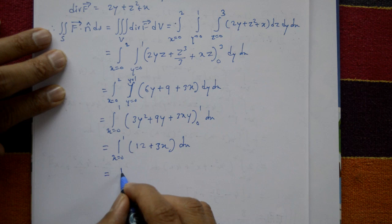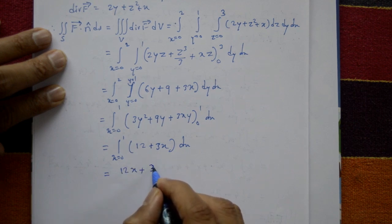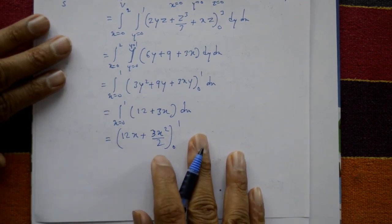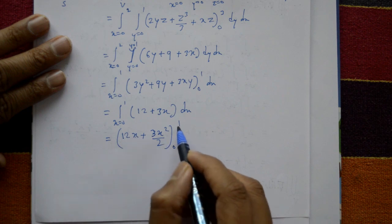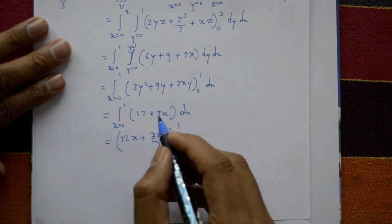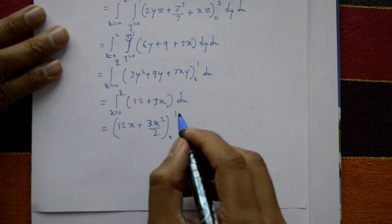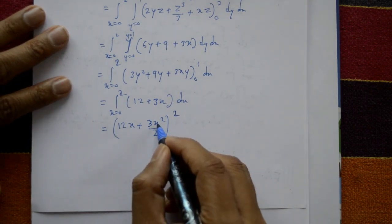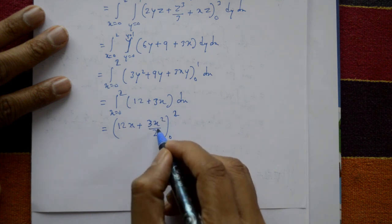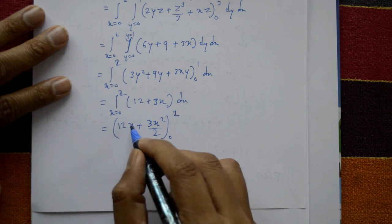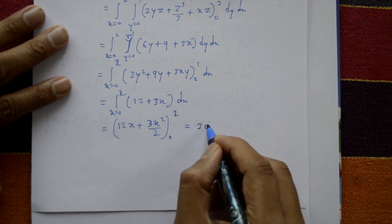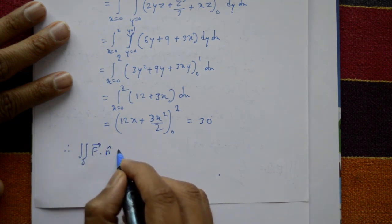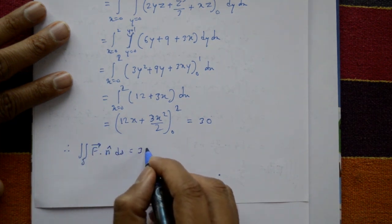Integrating with respect to x from 0 to 2: 12 integrates to 12x, and 3x integrates to 3x²/2. Evaluating at x=2: 12(2) + 3(4)/2 = 24 + 6 = 30; minus at x=0 gives 0. Therefore, the surface integral of F dot n-cap dS over S equals 30. This is the required solution.